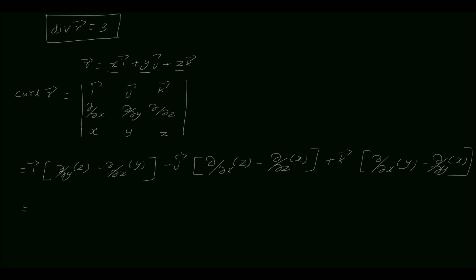So differentiating z with respect to y is 0. So i vector into 0 minus differentiating y with respect to z is 0, minus j vector into differentiating z with respect to x is 0 minus differentiating x with respect to z is 0, plus k vector into differentiating y with respect to x is 0 minus differentiating x with respect to y is also 0. So which is equal to 0. With this we can say curl of r vector equal to 0.